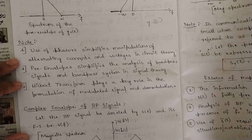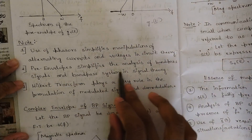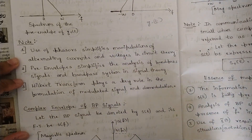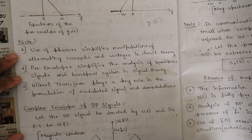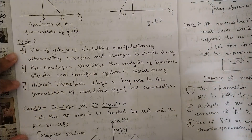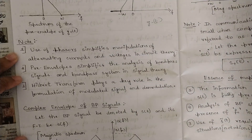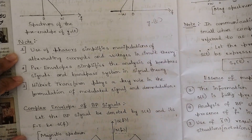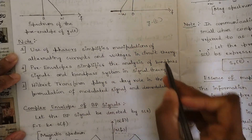Note: the use of phasors simplifies manipulations of alternating currents and voltages in circuit theory. Pre-envelope simplifies the analysis of bandpass signals in signal theory. Hilbert transform plays a key role in the formulation of modulated signals and demodulation. The phase reversal or phase change in a particular circuit affects the currents and voltages in a huge way, because whenever we do any phase shift of a signal the currents and voltages would vary instantaneously.